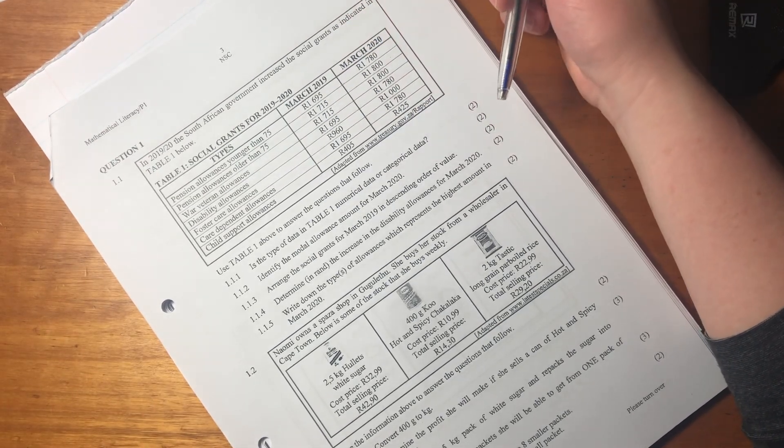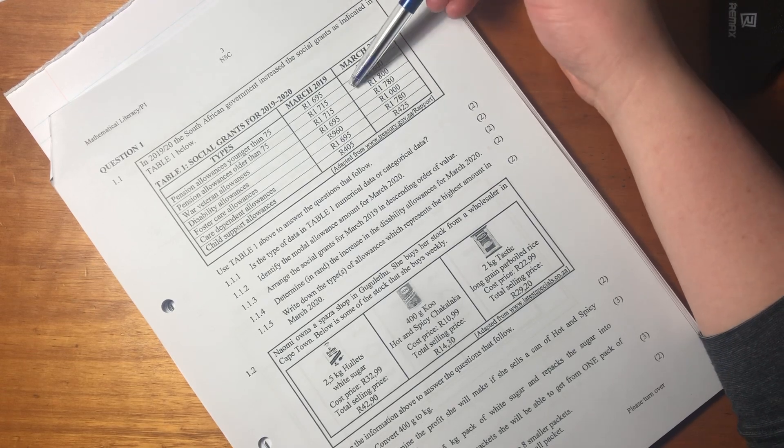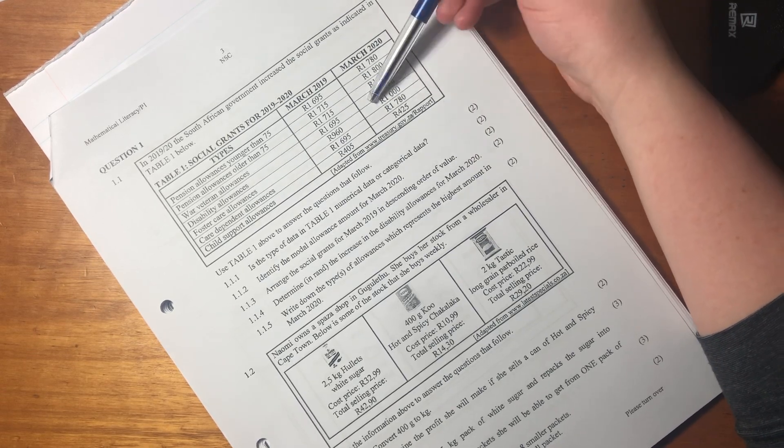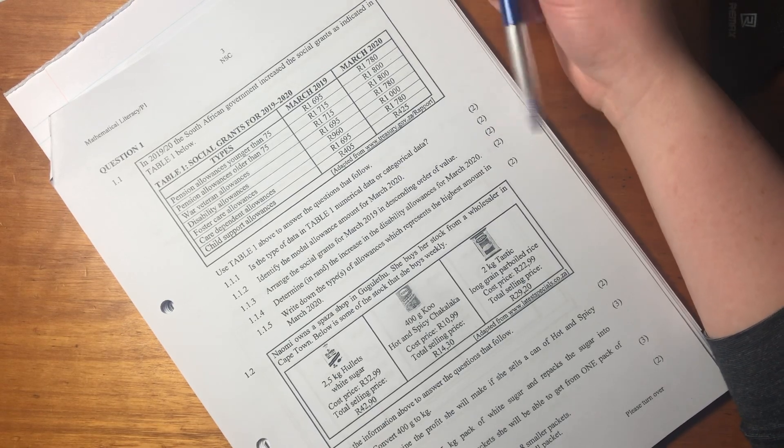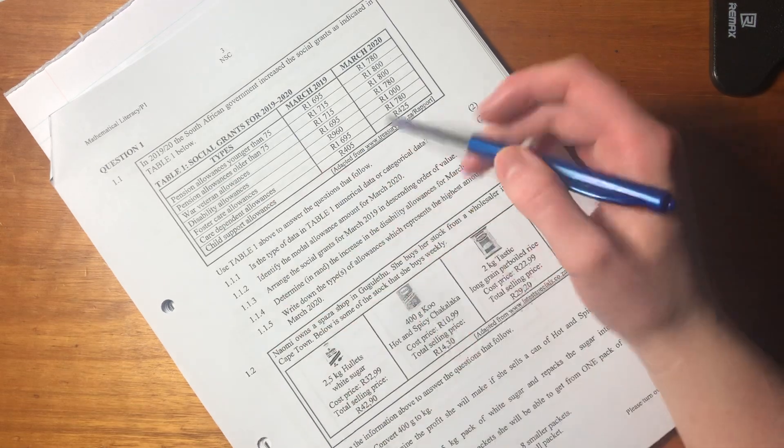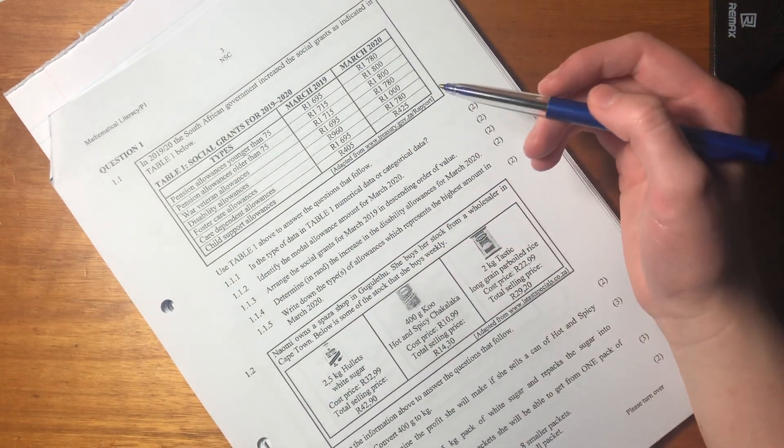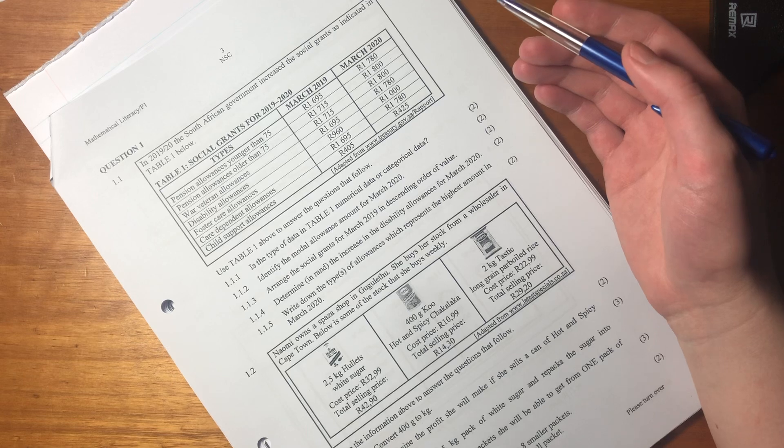Let's go to question 1.1. This is something I always tell my students: sometimes we don't understand the question we've been given, but the actual questions help us understand the context. It's asking us: is the type of data in table one numerical or categorical data? What it's testing is whether you understand the different definitions.